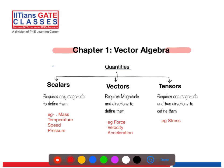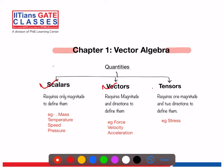All quantities can be classified into three parts: scalars, vectors, and tensors. Scalars are quantities which require only magnitude to define them. Examples are mass, temperature, speed, and pressure. For example, 15 degrees centigrade is a complete definition of temperature — you don't need to specify anything else.